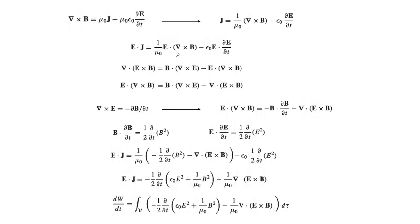The term of interest is E dot curl of B. Taking E dot curl of B to the left-hand side and the other term to the right-hand side, you get E dot curl of B equal to B dot curl of E minus del dot (E cross B). Using Maxwell's equation, you can replace curl of E with minus partial B by partial T — this is Faraday's law. So the expression becomes E dot curl of B equal to minus B dot partial B by partial T minus del dot (E cross B).